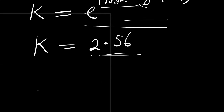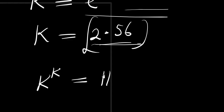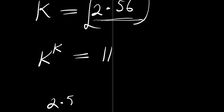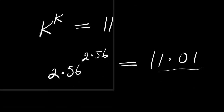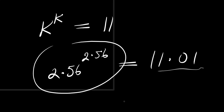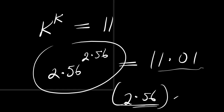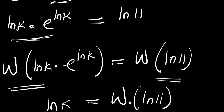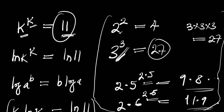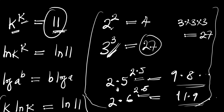So if you recall the function k to the power of k equals 11 and substitute this value, you will have 2.56 raised to the power of 2.56, which gives 11.0 something — approximately 11. This confirms that the value of k that satisfies this equation is 2.56. I believe you have learned something new and now know how to apply the Lambert W function. If you enjoyed this video, kindly leave a thumbs up and a comment. Thank you and goodbye.